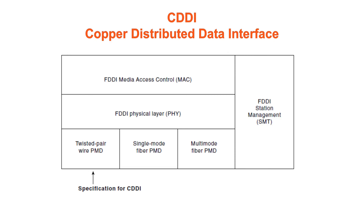CDDI is consistent with the physical and media access control layers defined by the ANSI standard. The ANSI standard recognizes only two types of cables for CDDI: shielded twisted pair and unshielded twisted pair. STP cabling has a 150 ohm impedance and adheres to EIA-TI-568 specifications. UTP is data-grade cabling consisting of four unshielded pairs, using tight pair twists and specially developed insulating polymers in plastic jackets, adhering to EIA-TI-568B specifications.